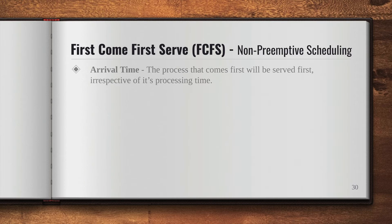In this algorithm, the criteria is the arrival time. So the process that comes first will be served first, irrespective of its processing time. It doesn't matter how much processing time a process takes — just because one process has a higher processing time doesn't mean it will be executed later. Whatever comes first will be served first, meaning whichever process enters the ready queue first will go into the running state first.